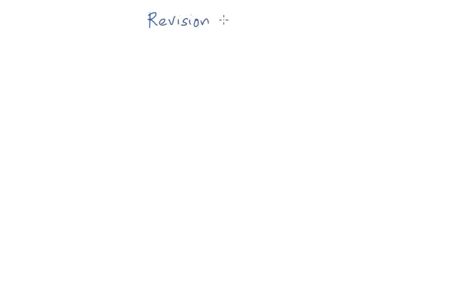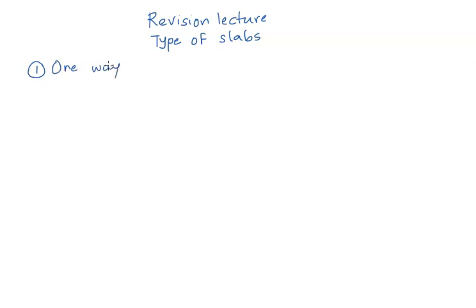Hello and welcome to another lecture. This is going to be a revision lecture on types of slabs. We have learnt about two types of slabs — one-way slab and two-way slab. Let us now see what is meant by one-way slab and what is meant by two-way slab.